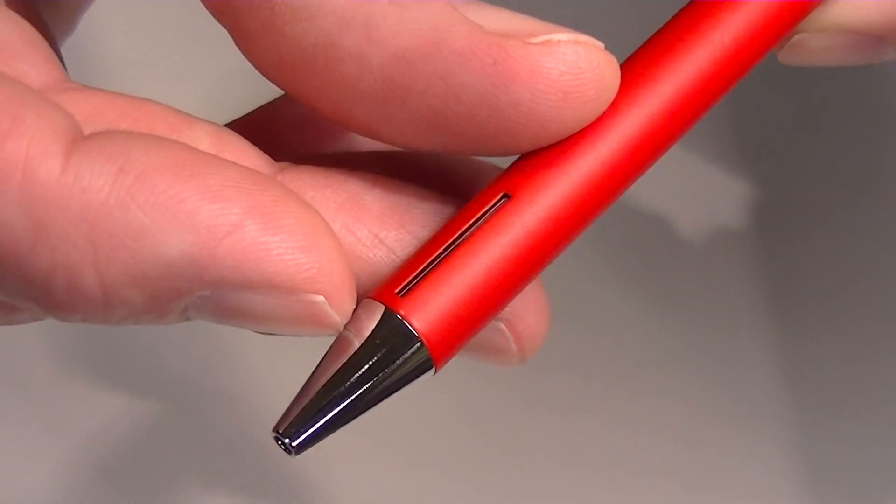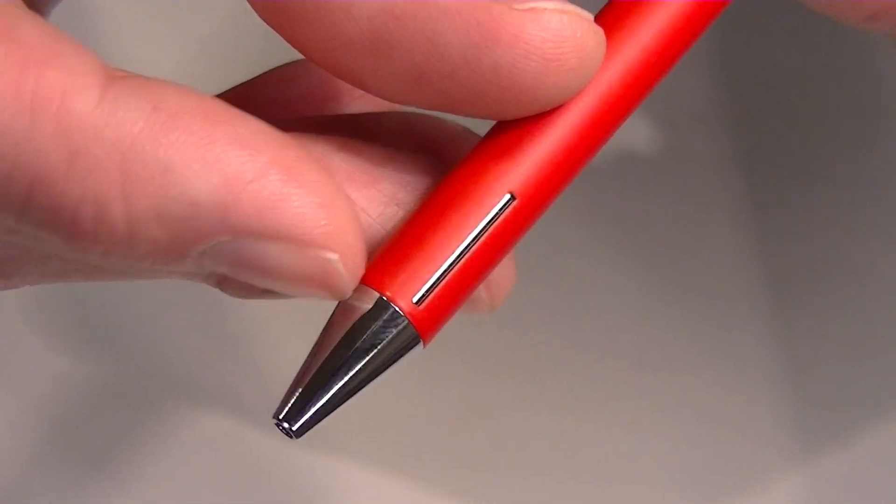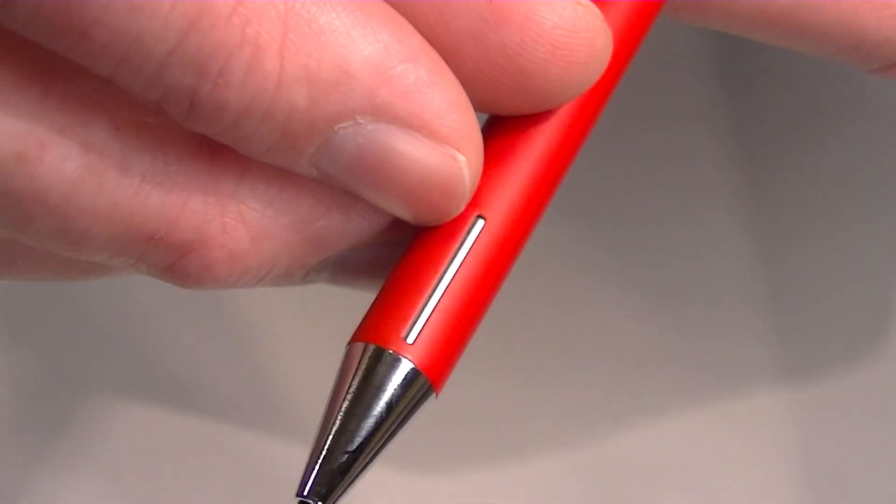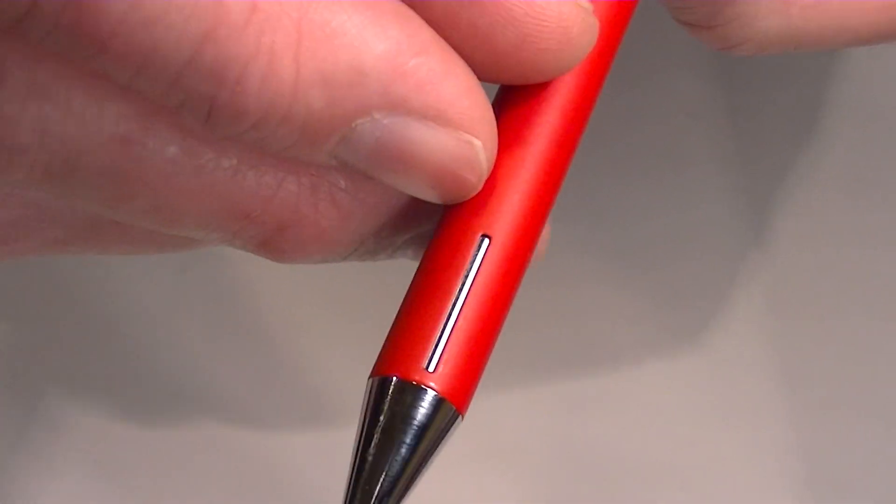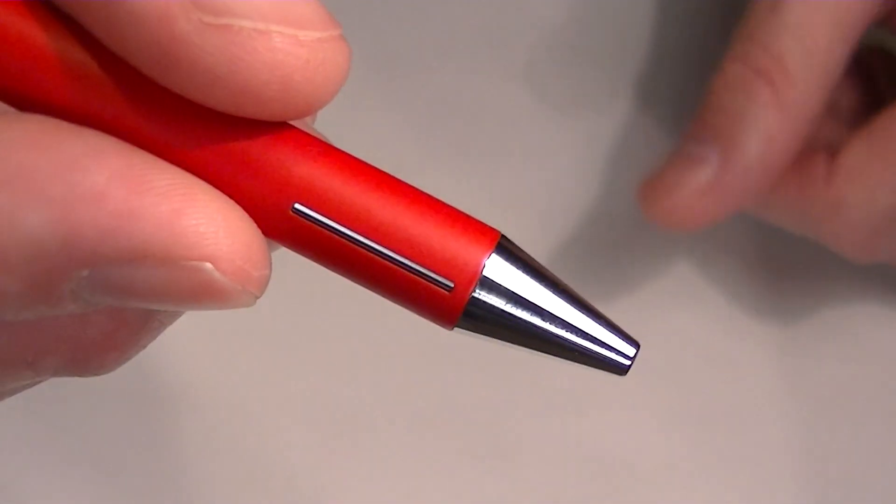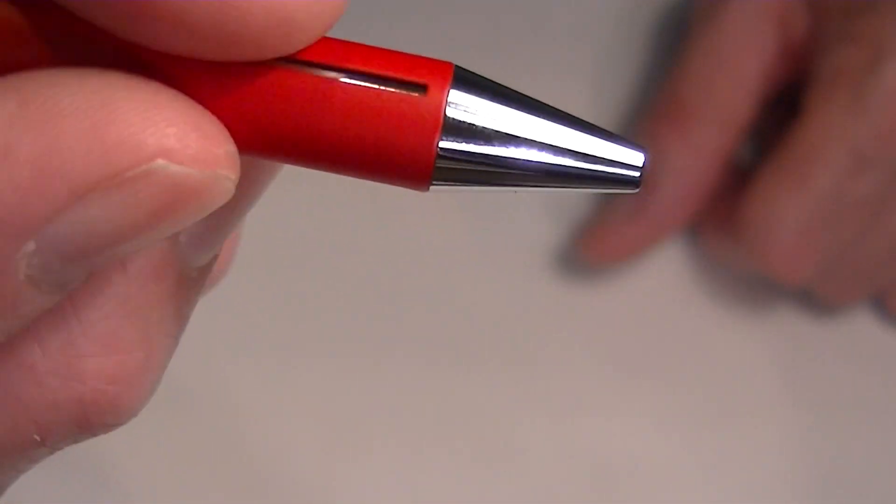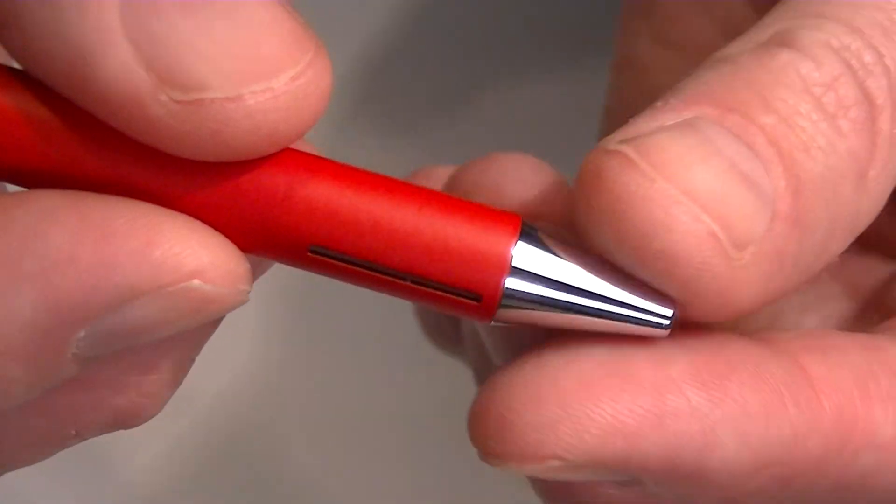And then at the bottom of the pen it has a chrome tip to it and there are actually three slits cut into the barrel of the pen so you can see the grip section on the inside after it's threaded in there to give you a little grip with those as well.